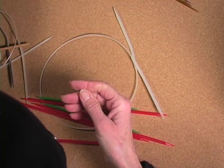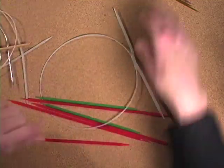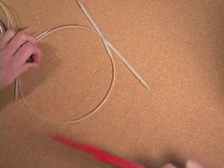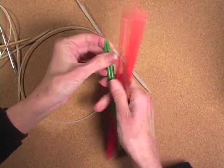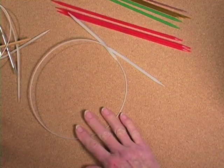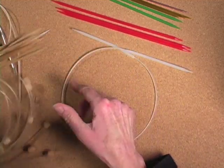You can also use short straights or you can use double pointed. We have some double pointed ones here. And if you want, you can choose these. Sometimes you need circular because what you're building requires a circular needle.